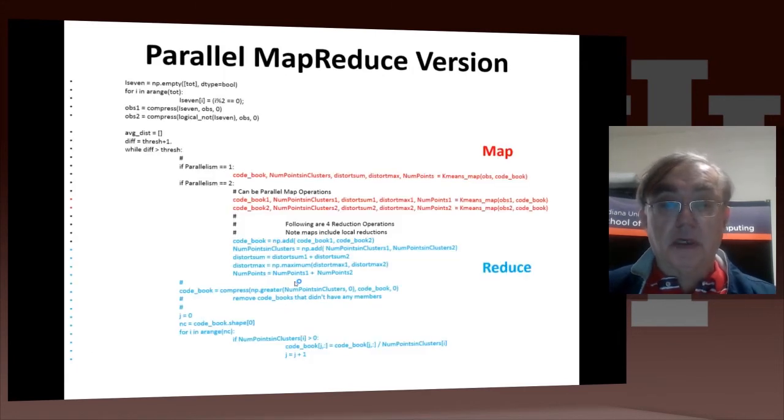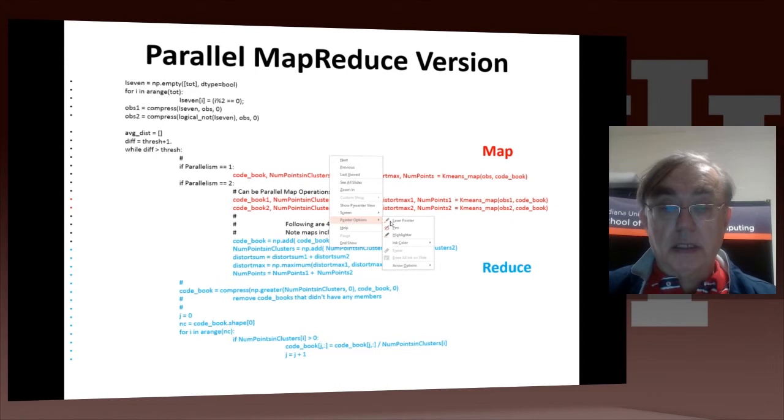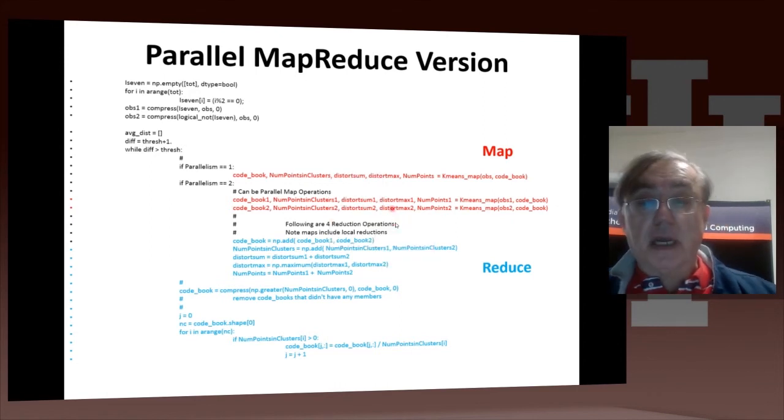The code is shown here. This code is available for you to look at at the larger front side. It has both the Map and the Reduce steps here. The Map is a call to kmeans_map, which we'll go through on the next slide.